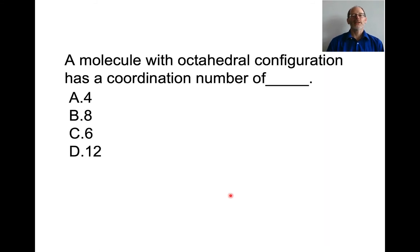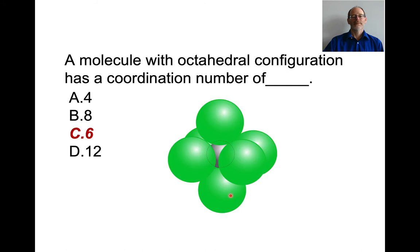Quick quiz: if you have a molecule with octahedral configuration, what would its coordination number be? The answer is 6. This is the tricky one — when you see 'octahedral,' you might think 8, but the polygon does have 8 sides while the number of coordinating anions is 6.